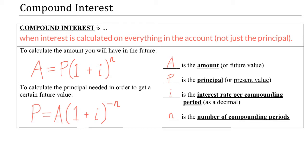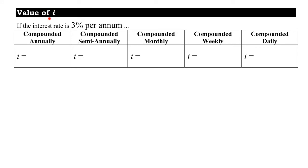I is the interest rate per compounding period. Interest rates are always given per annum, or per year. For example, a 3% interest rate on a savings account means you're getting interest at 3% per year. But the interest could be calculated more than once per year. The terms compounded annually, semi-annually, monthly, weekly, and daily all refer to the number of times each year interest is being calculated.